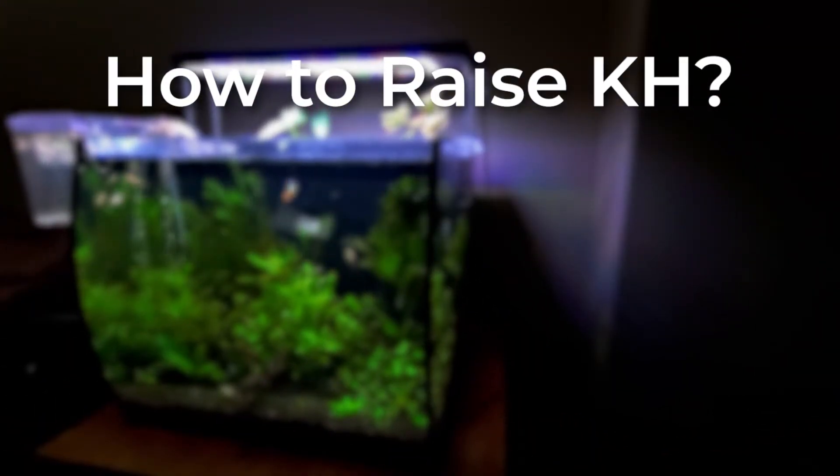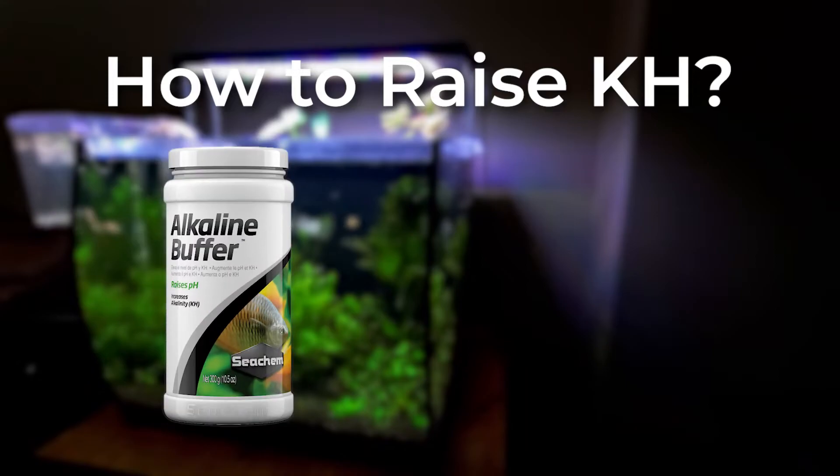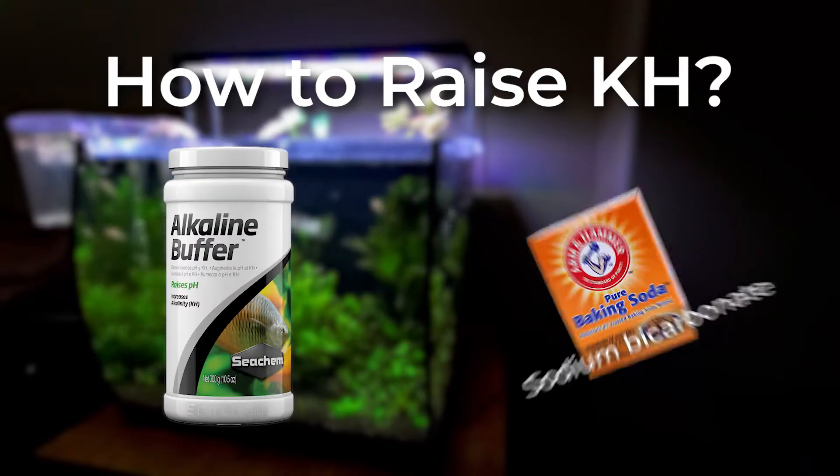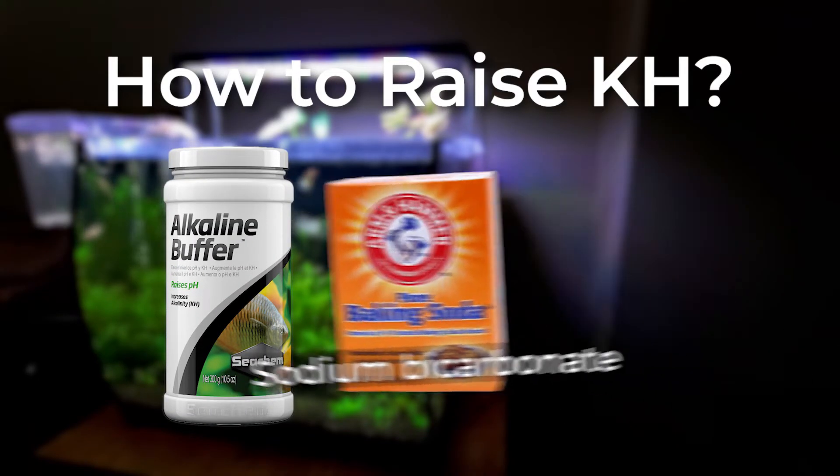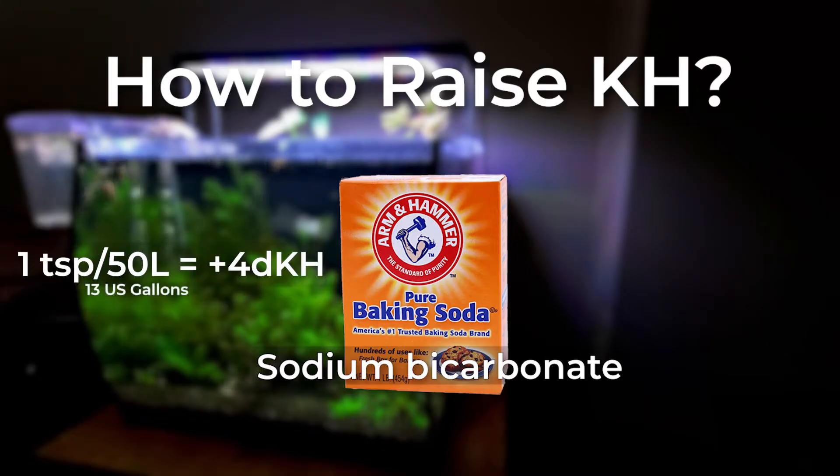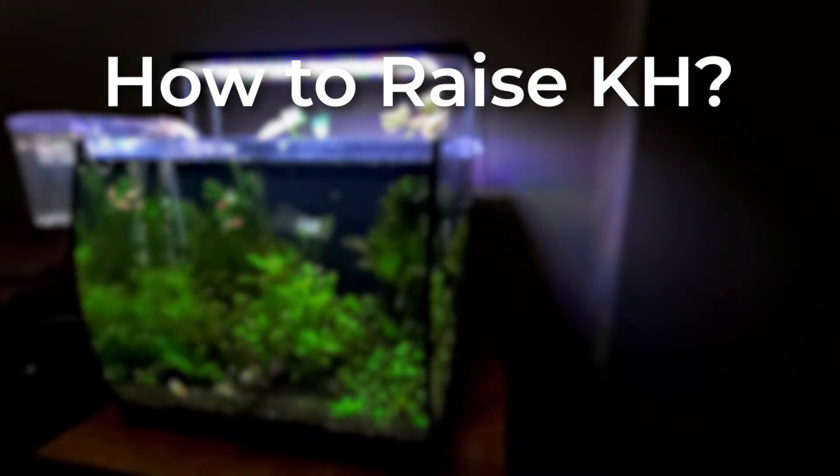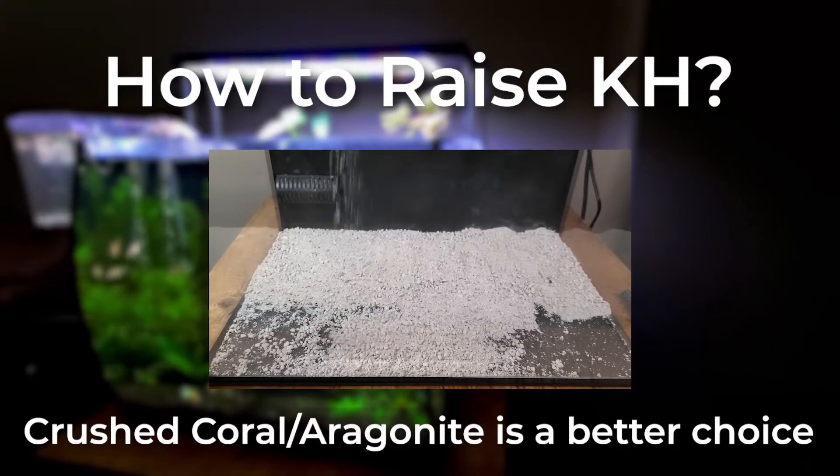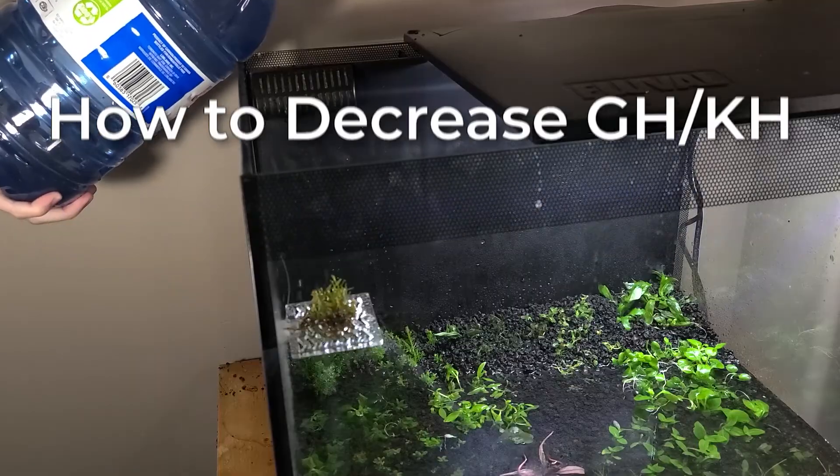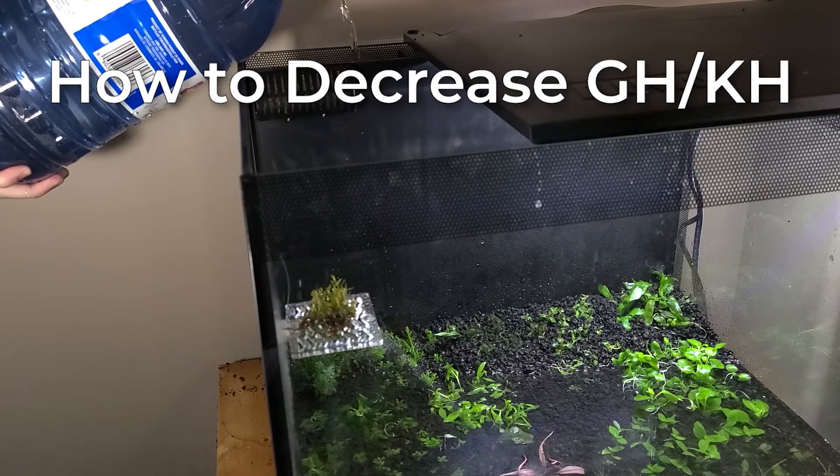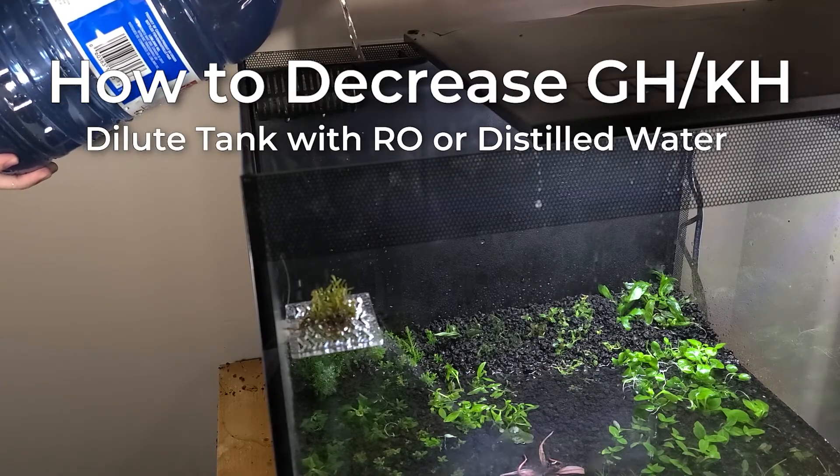To raise KH, Seachem also has a product for this, alkaline buffer. Although, sodium bicarbonate will also have the same effect. One teaspoon per 50 liters to raise it to 4 degrees. However, it is better to use crushed coral instead, as it's a better pH buffer. To decrease GH and KH, dilute the tank with some RO or distilled water.